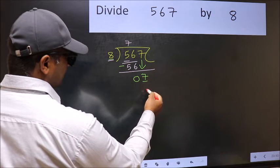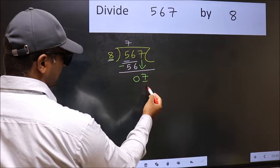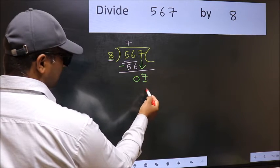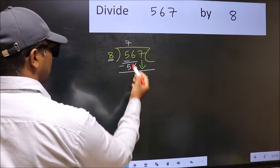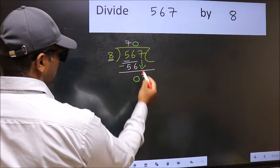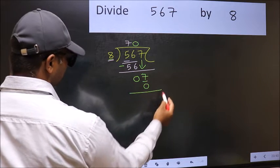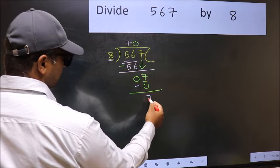which number should we take here? If I take 1 we will get 8, but 8 is larger than 7. So what we should do is we should take 0. So 8 into 0 is 0. Now we should subtract: 7 minus 0 equals 7.